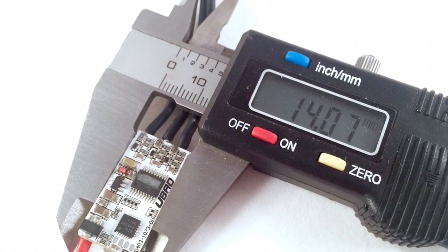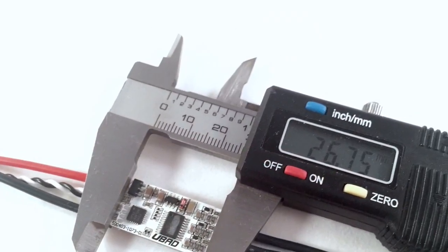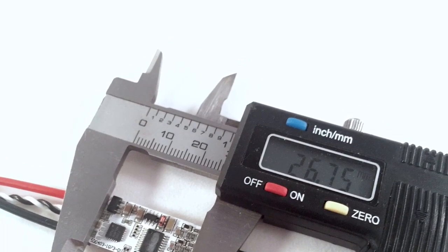Now, if you imagine putting that on a 4S, I can only imagine the margins to be greater. And on a small frame running a four inch prop, that's significant.